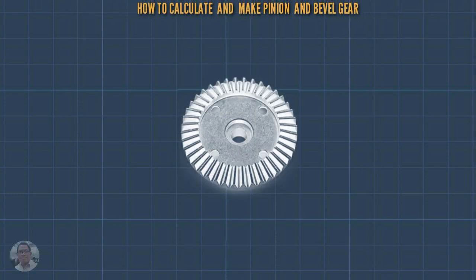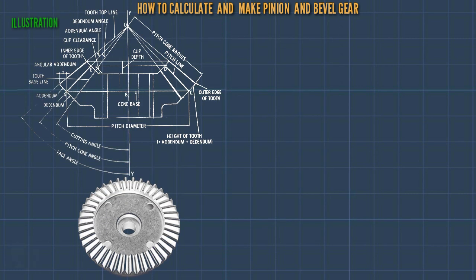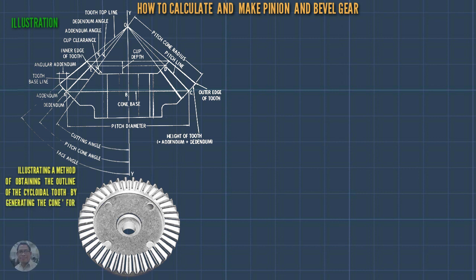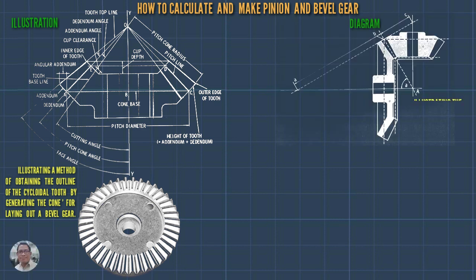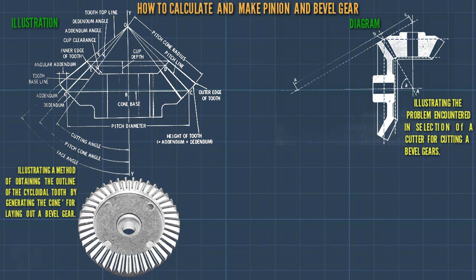In this video you can learn how to calculate and make pinion and bevel gear. This is illustrating the method of obtaining the outline of the cycloidal tooth by generating the cone for laying out the bevel gear. This is the diagram illustrating the problem encountered in selection of cutter for cutting bevel gears.